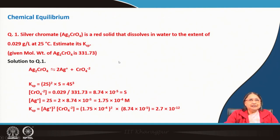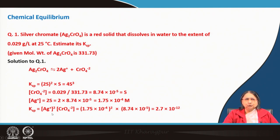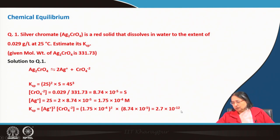As an example: silver chromate, Ag₂CrO₄, is a red solid dissolving in water to the extent of a given number of grams per liter at 25°C. To find Ksp, set up the balanced equilibrium equation, convert solubility from g/L to mol/L, write the equilibrium expression, and substitute. The resulting Ksp is on the order of 10⁻¹².